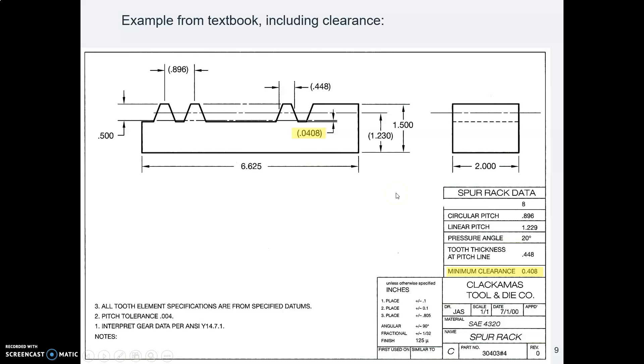Here's an example out of our book that shows various dimensions. There's the pitch line with a reference. This example from the book, this is a tool and die company up north near Portland, and this company puts in the clearance. There's the clearance. There's the clearance with a reference notation on it with parentheses, and here it is in the cutting table.